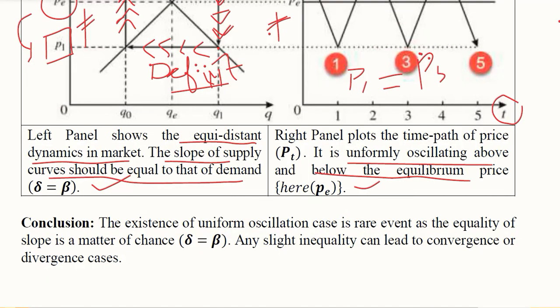The conclusion is that the existence of uniform oscillation case is a rare event. Yes, it is, because the equality of Delta and Beta, if they are equal, is a rare thing. But it can happen and we should have this analyzed in the three possibilities of the Cobweb model oscillations. Equality of the slope is a matter of chance. Any slight inequality can lead to convergence or divergence.